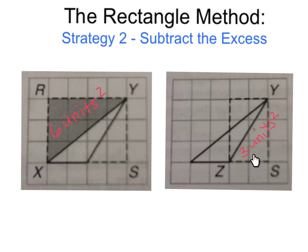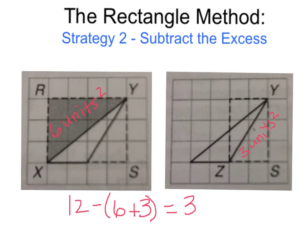Because the area of the entire rectangle was twelve square units, and the combined areas of the two triangular regions that we created is nine square units, the area of triangle X, Y, Z is twelve minus (six plus three). First, we do six plus three equals nine, and twelve minus nine is three. So the total area of triangle X, Y, Z is three units squared.